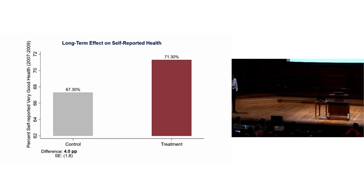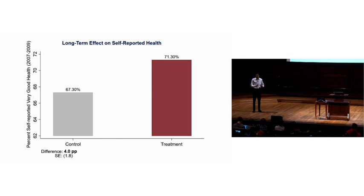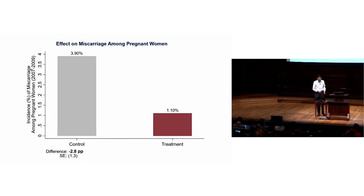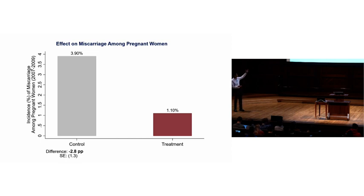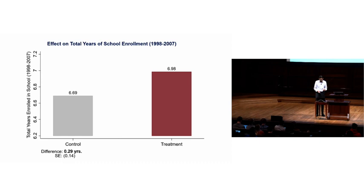Looking at self-reported health between 2007 and 2009 — 10 years after the intervention — people in the treatment group report somewhat higher rates of being in good health. These are persistent gains even after the treatment period ended. Looking at more objective measures, the rate of miscarriage among pregnant women drops substantially from 4% in the control group down to 1.1% in the treated group.